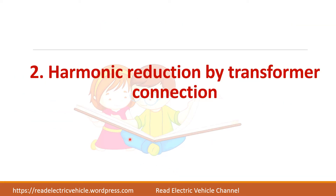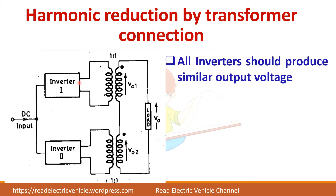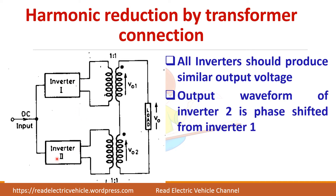The next method is harmonic reduction by using transformer connection. In this method, you need more number of inverters. Here two inverters are taken, but you can take any number. Each inverter output is connected to a transformer and the transformer secondaries are connected in series. All inverters should produce similar output — that is an important condition. The output of one inverter is phase shifted from the other, and depending upon the phase shift, the final resultant voltage changes so that the harmonic content is reduced.